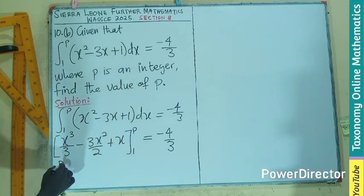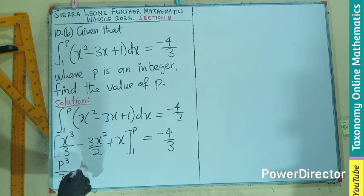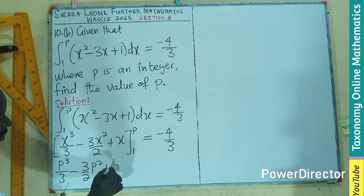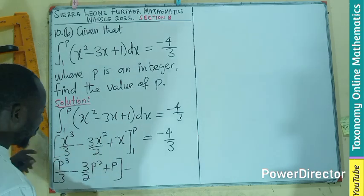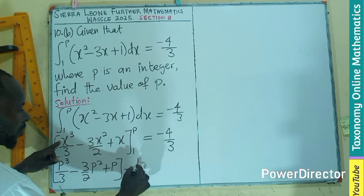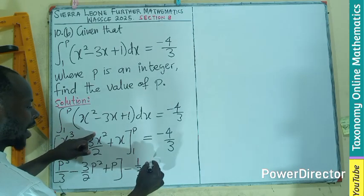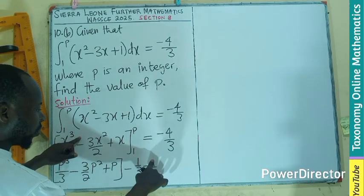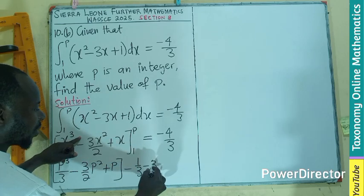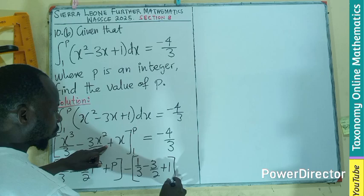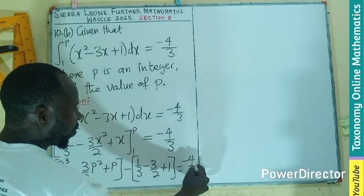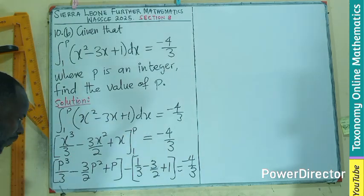We are going to replace the x by p and 1. So if I replace that, we have p exponent 3 on 3 minus 3 on 2 p squared plus p, all this minus the lower limit. Minus 1 on 3 plus 1 on 2 plus 1. All this result will give you negative 4 on 3.